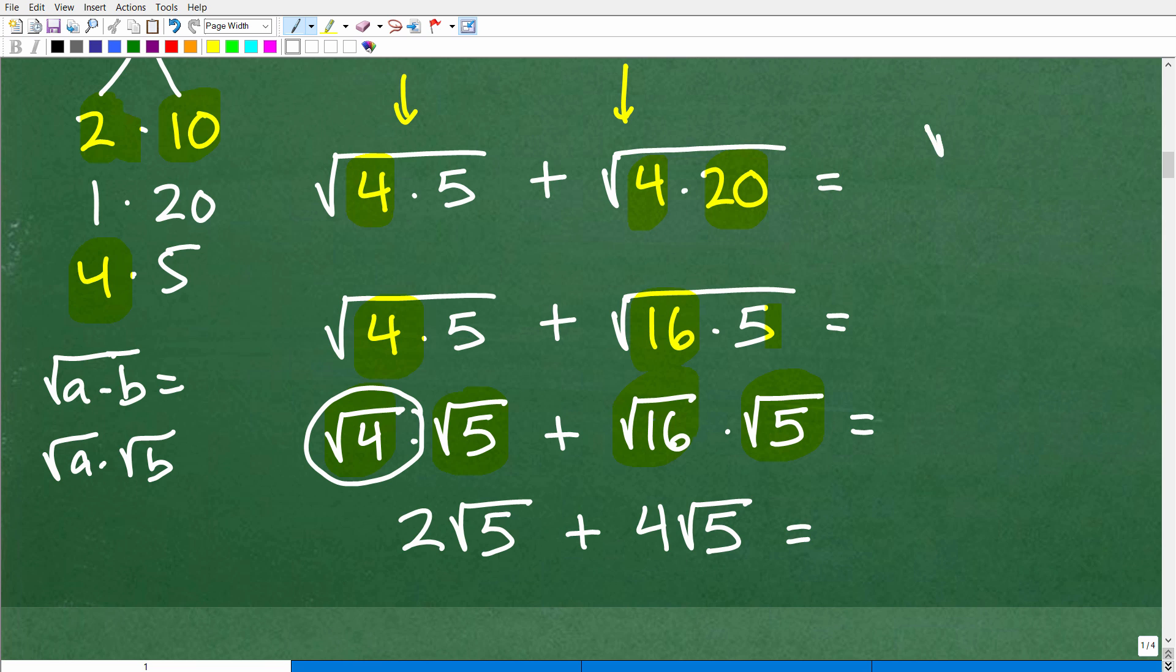Anytime in algebra you're dealing with square roots of numbers like the square root of 90 and things like that, you need to be thinking of perfect squares and kind of rewriting each of these square roots in its most simplest form. So now I have this basically the equivalent problem, 2 times the square root of 5 plus 4 times the square root of 5.